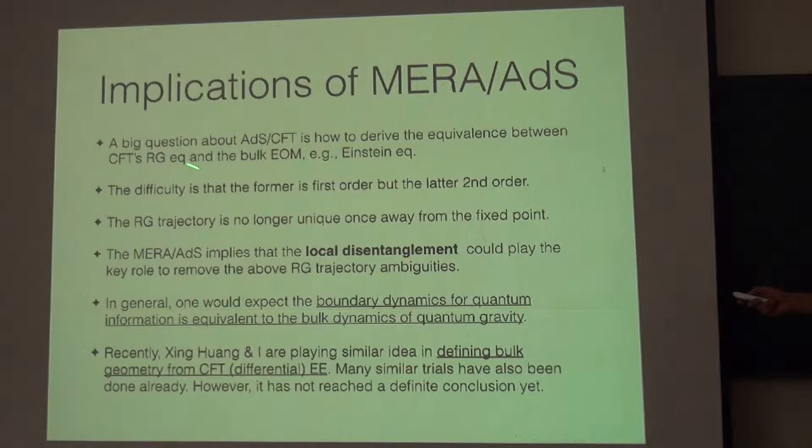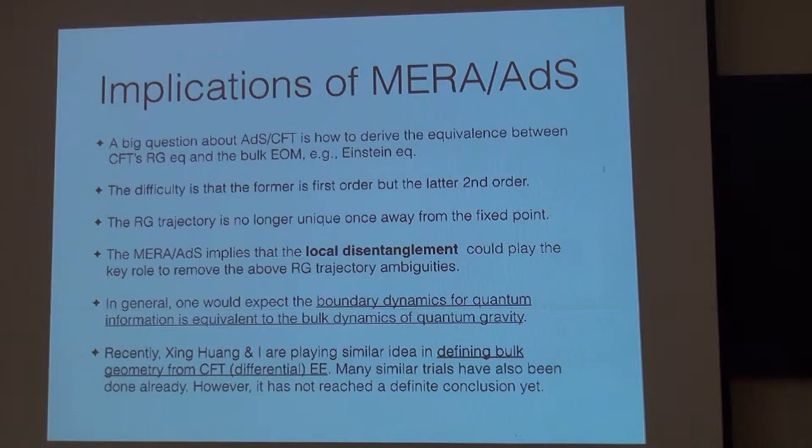And usually, naively, it's very difficult because the RG equation usually is the first order, but the Einstein equation usually is the second order. So actually, they mismatch between the order of the equation. So it's not so clear how can we start from a first order equation and then derive the second order equation in the bulk. Is there something like Hamiltonian formulation that you use the first order, the second order equation?